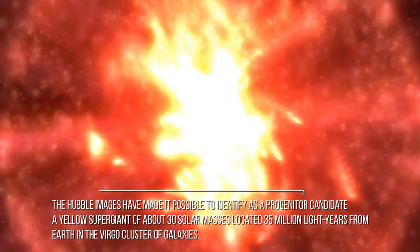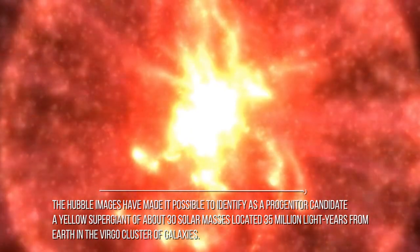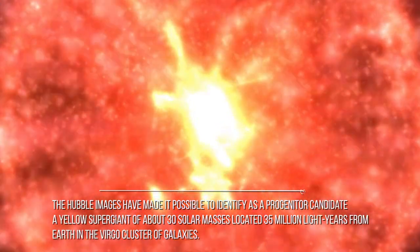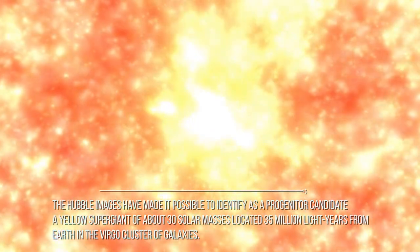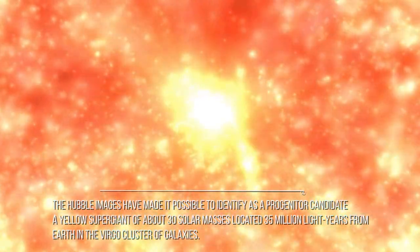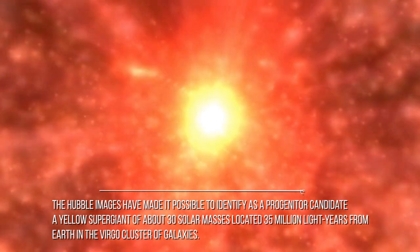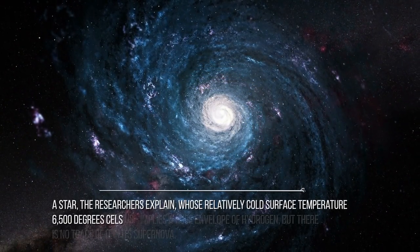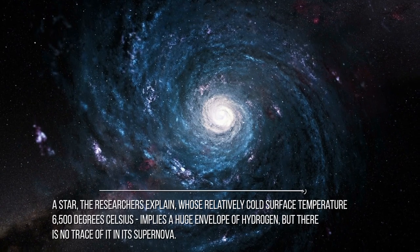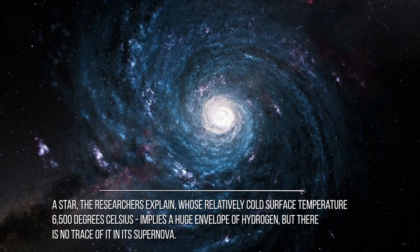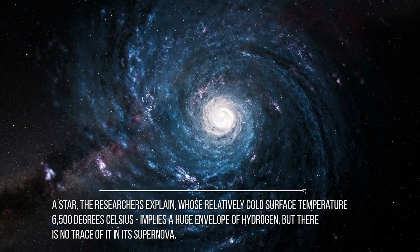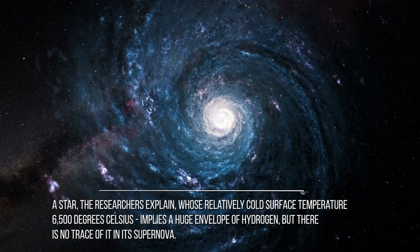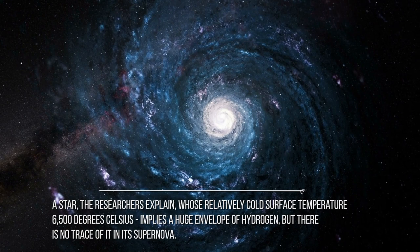The Hubble images have made it possible to identify as a progenitor candidate, a yellow supergiant of about 30 solar masses located 35 million light-years from Earth in the Virgo cluster of galaxies. A star, the researchers explain, whose relatively cold surface temperature, about 6500 degrees Celsius, implies a huge envelope of hydrogen, but there is no trace of hydrogen in its supernova.